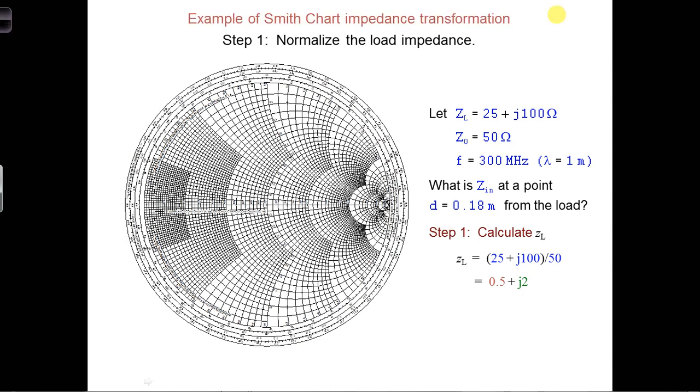I hope you just worked this out on your own. First we have to normalize for step 1. We divide by 50 ohms, the characteristic impedance, so we get 0.5 plus j2.